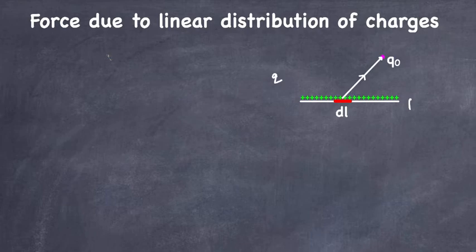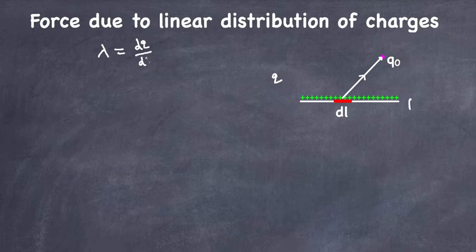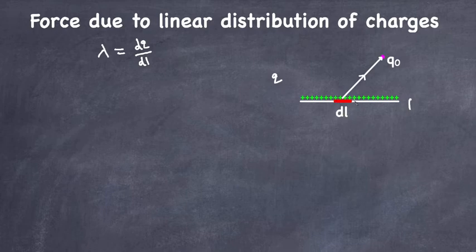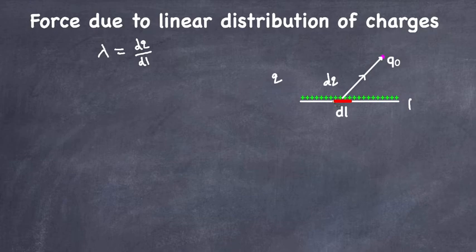For that, we're going to use the linear charge density formula: λ = dq/dl. If you'd like to learn more, watch my previous video on continuous charge distribution, where I talk about linear, surface, and volume charge density. Now, we're going to take a small element of length dl on the wire, and the charge on this element dl is going to be dq.